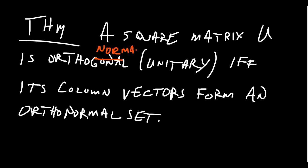That actually makes a lot of sense, and some linear algebra textbook authors insist on calling these orthonormal matrices for that reason. But the label 'orthogonal' is used more commonly, so I think using a different term would put students at a disadvantage.